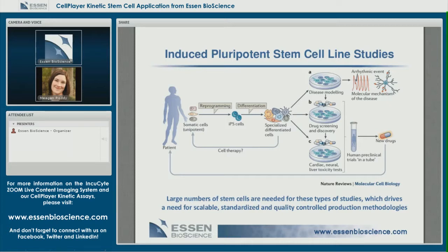The big idea behind reprogramming of somatic cell types into stem cells is that you can take a patient's own cells — or a donor cell line where appropriate — and revert them back to an undifferentiated state of pluripotency, so that cells can then be differentiated into any cell type of the body. Those cells can be used in cell therapy and transplantation, disease modeling like Parkinson's disease, drug screening and discovery, as well as toxicity evaluation.